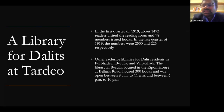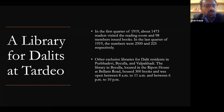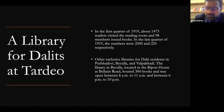At Tardeo, the SSL established a Dalit library — a library exclusively for Dalits — which shows the SSL was very attentive to caste. Seeing the success at the Tardeo library, they established other exclusive Dalit libraries in various neighborhoods and chawls where Dalits resided, such as Prabha Devi, Vaikola, and Valvkhari. For example, the library in Vaikola was located in Rippon House at Balasis Road, housed 300 books, and was open between 8am to 11am perhaps for children, and 6pm to 10pm for adult working population.